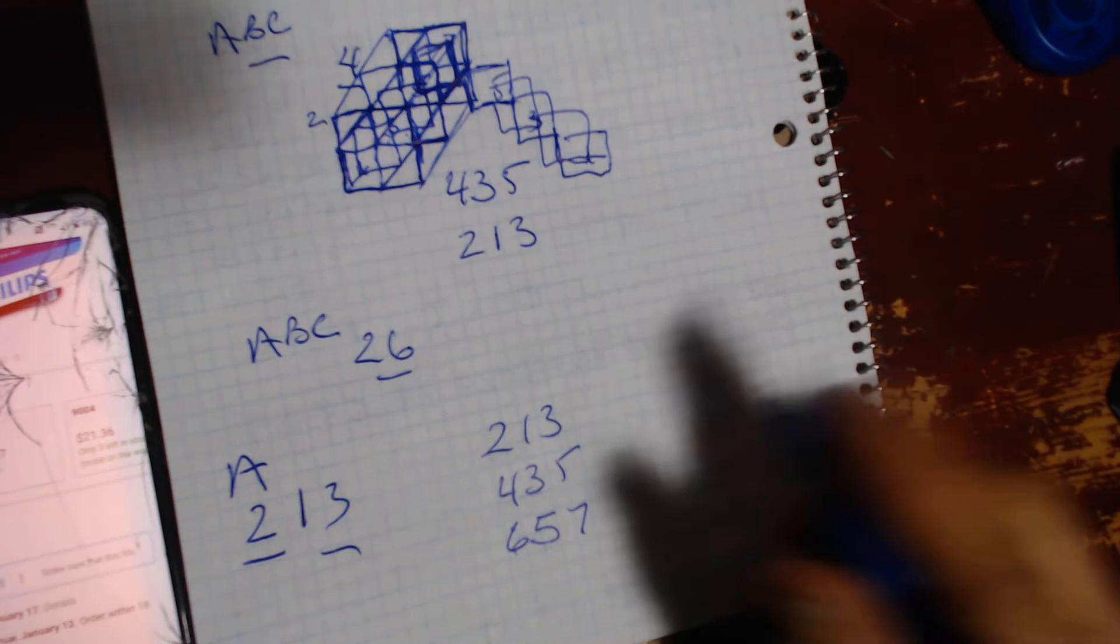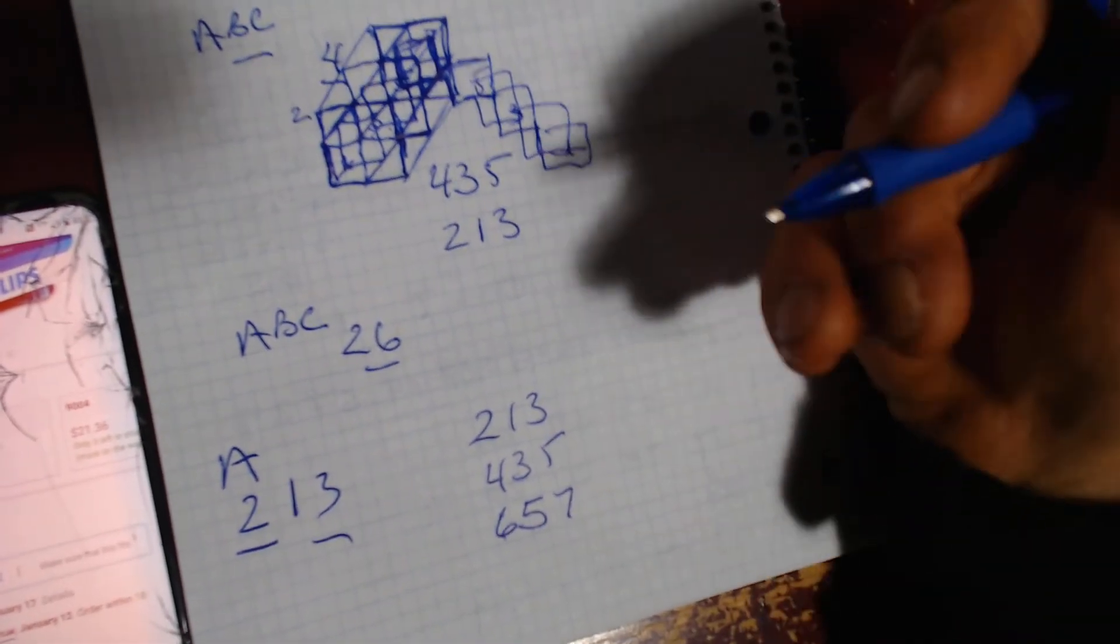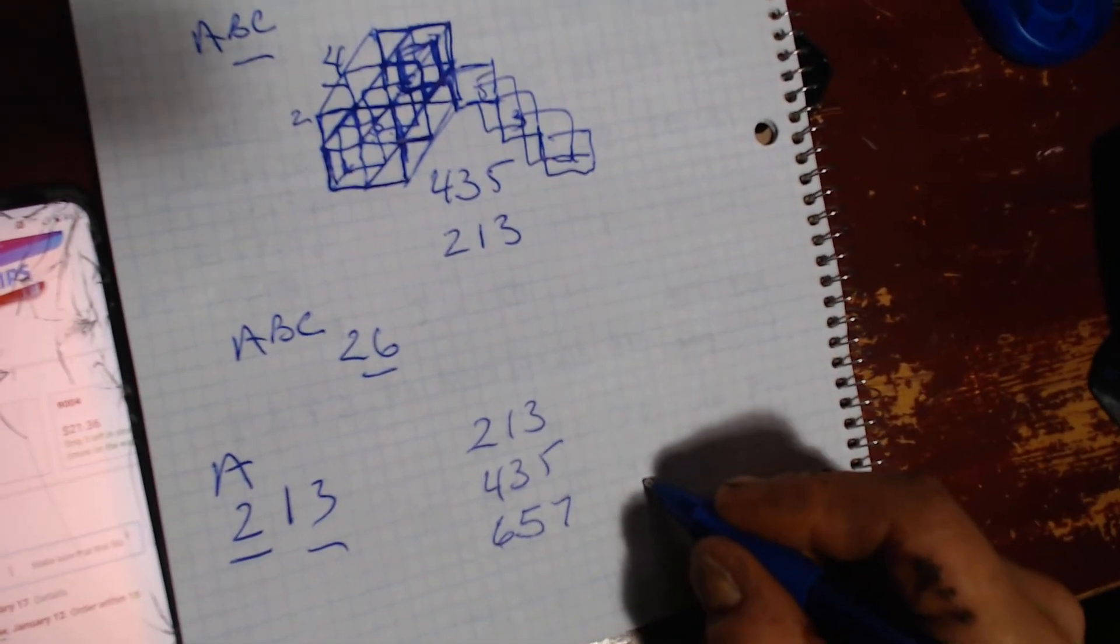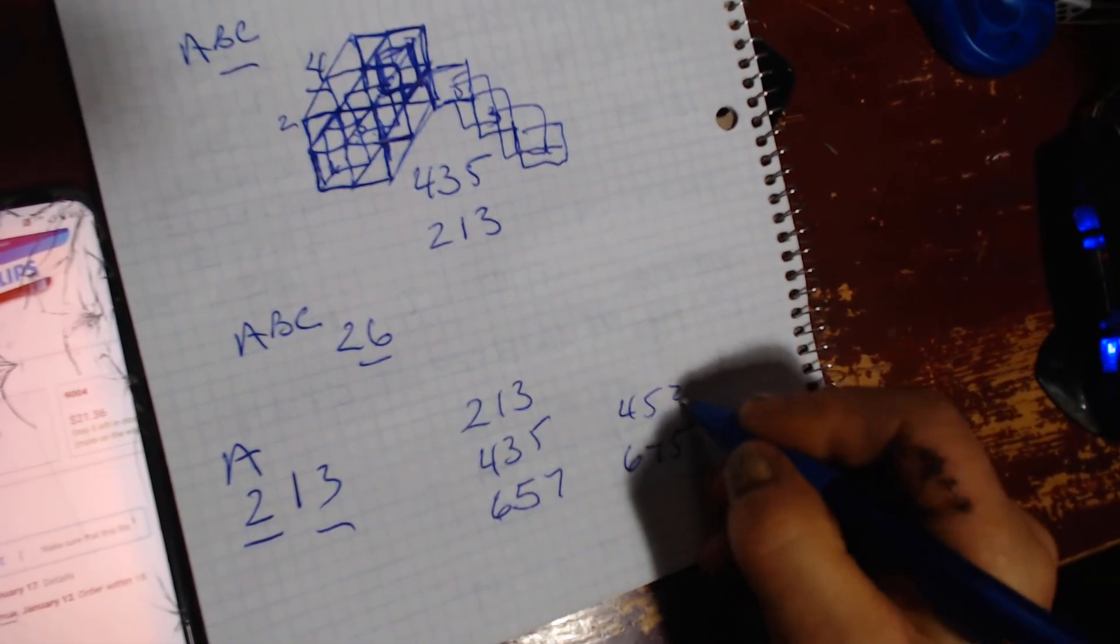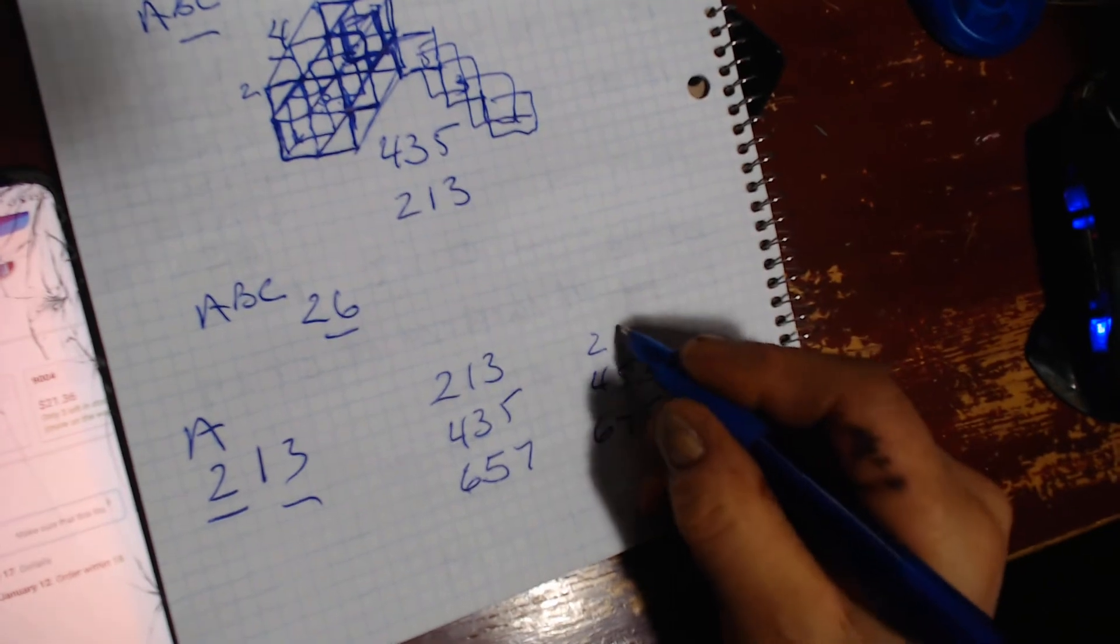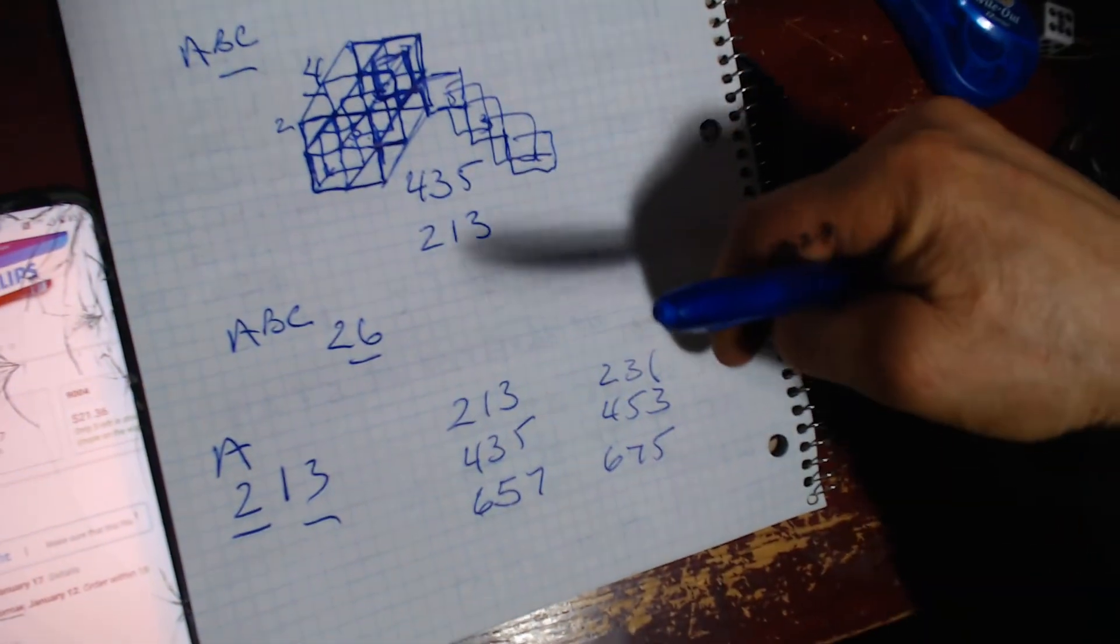But on this side, okay, you're going to come down the ladder, and it's going to be six with seven, five. And then it's going to be four with five, three. And then it's going to be two with three, one, because we're going down.